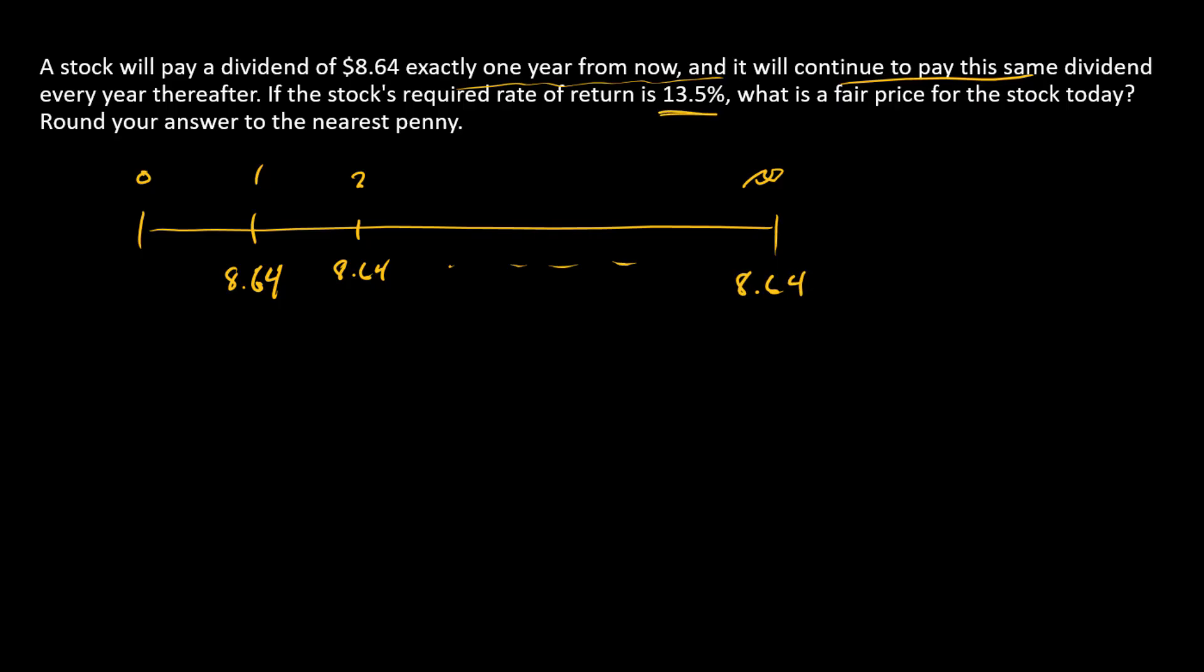And we're given a required rate of return which is our discount rate and asked to find a fair price. Taking a quick look at what we have here we can see very clearly that we've got a perpetuity.